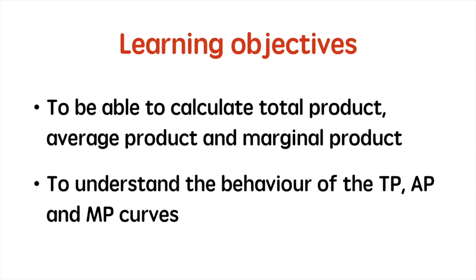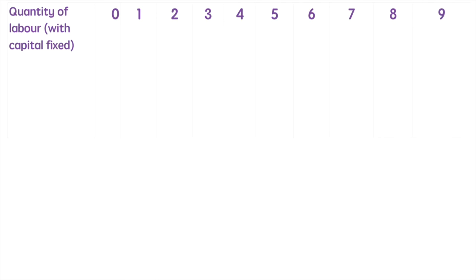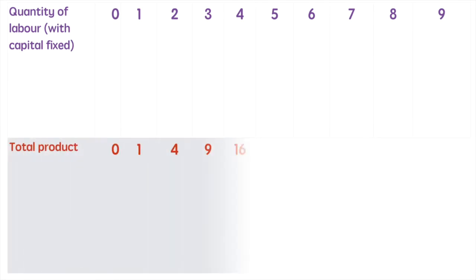The first thing we do when calculating product is consider our variable input, which is labour in this case. Remember, we consider capital fixed in the short run so the only variable changing is labour. For each additional unit of labour we'll see a change in total output.